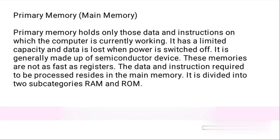Primary memory holds only those data and instructions on which the computer is currently working. It has a limited capacity and data is lost when power is switched off. It is generally made up of semiconductor devices. These memories are not as fast as registers. The data and instructions required to be processed reside in the main memory. It is divided into two subcategories: RAM and ROM.